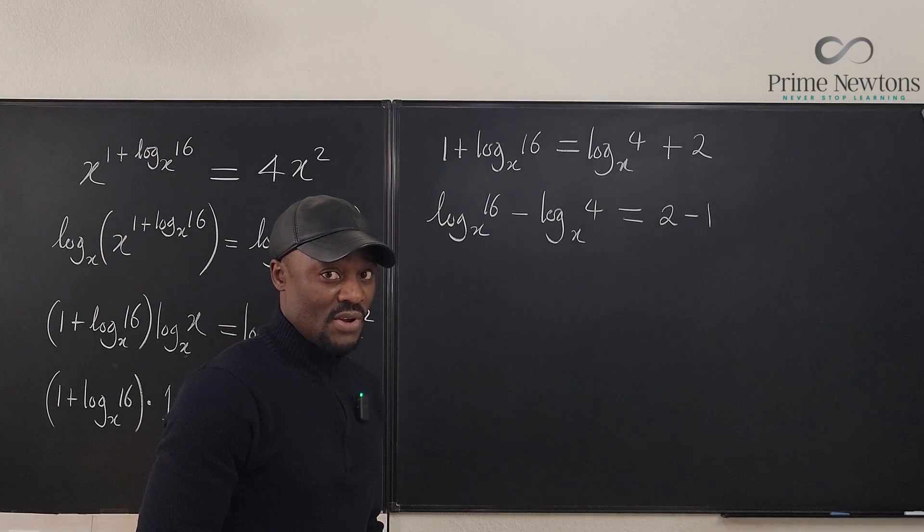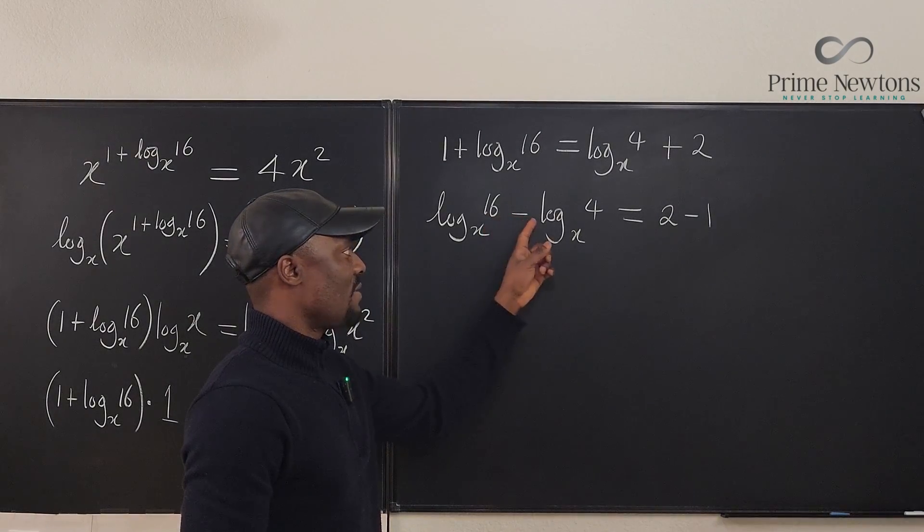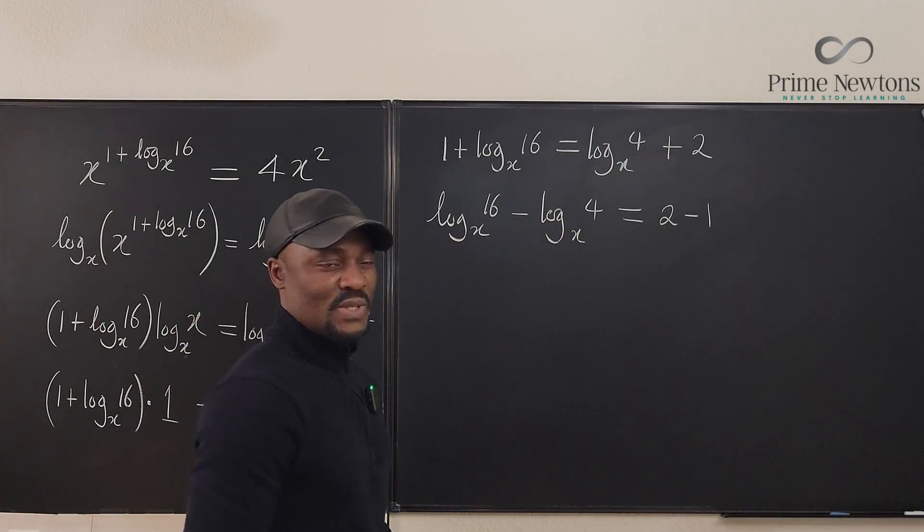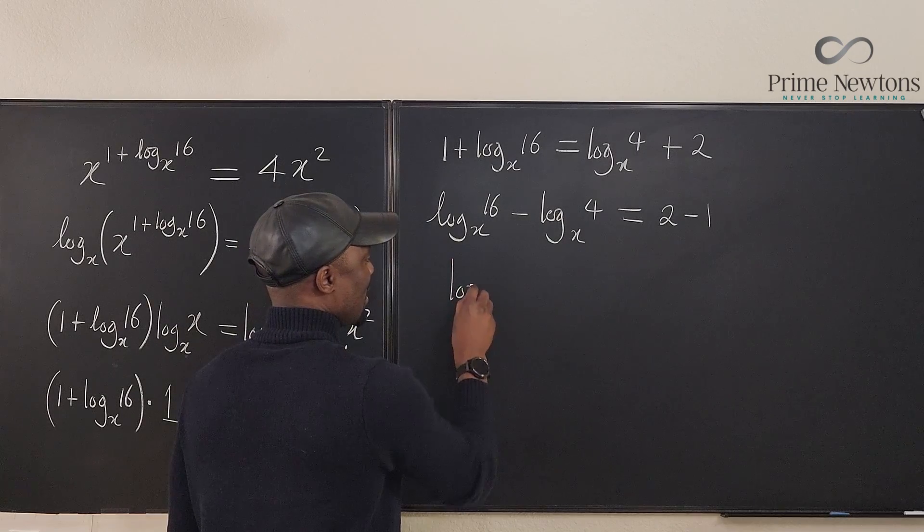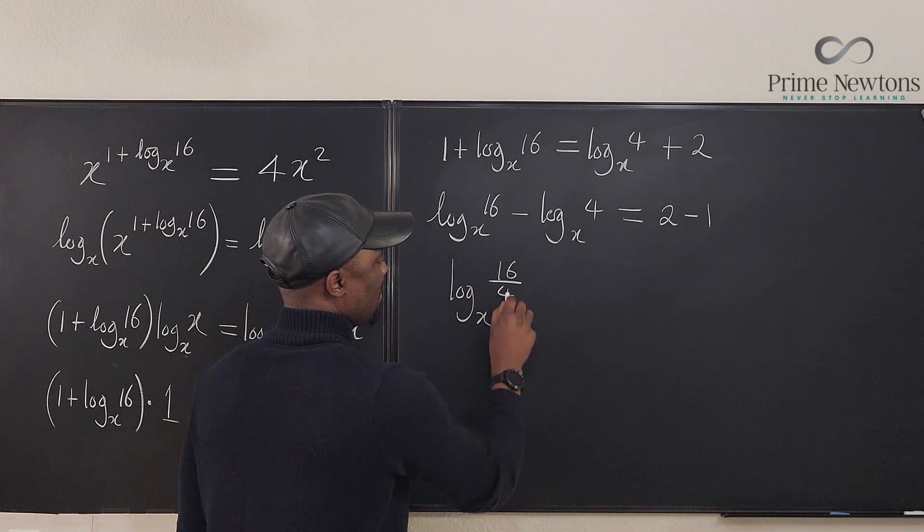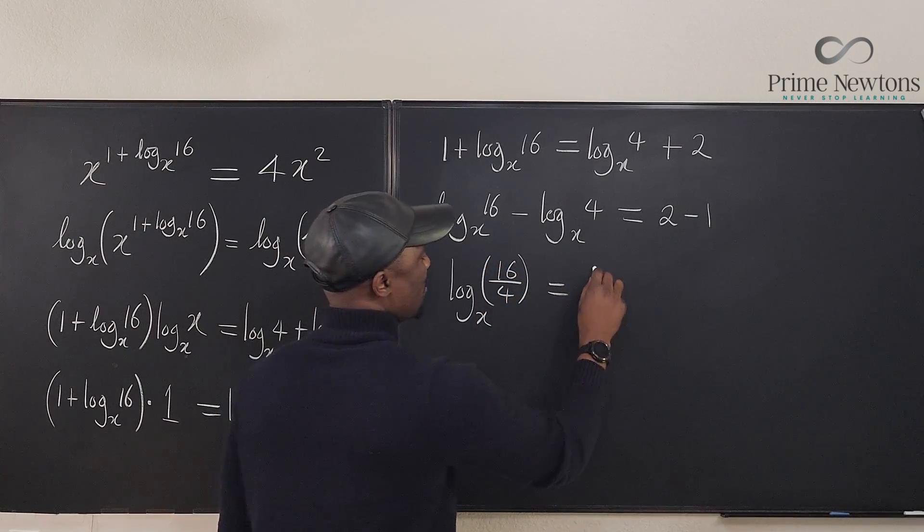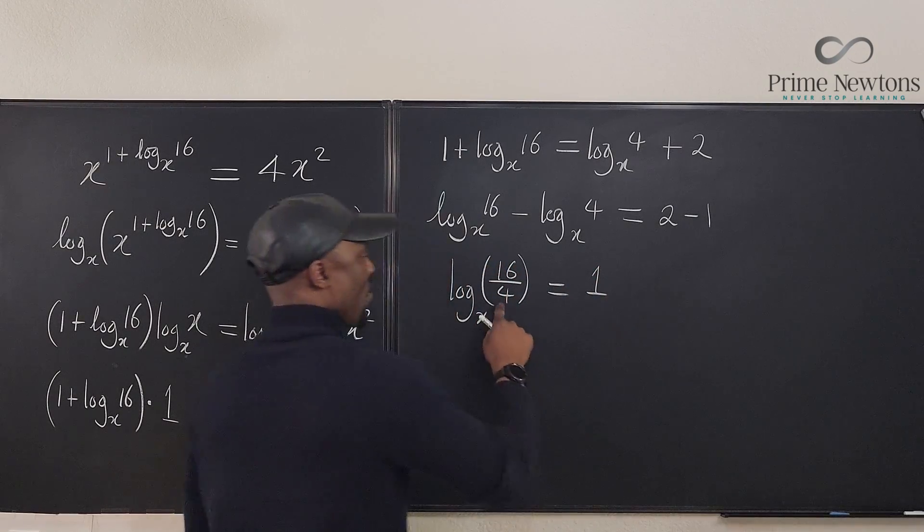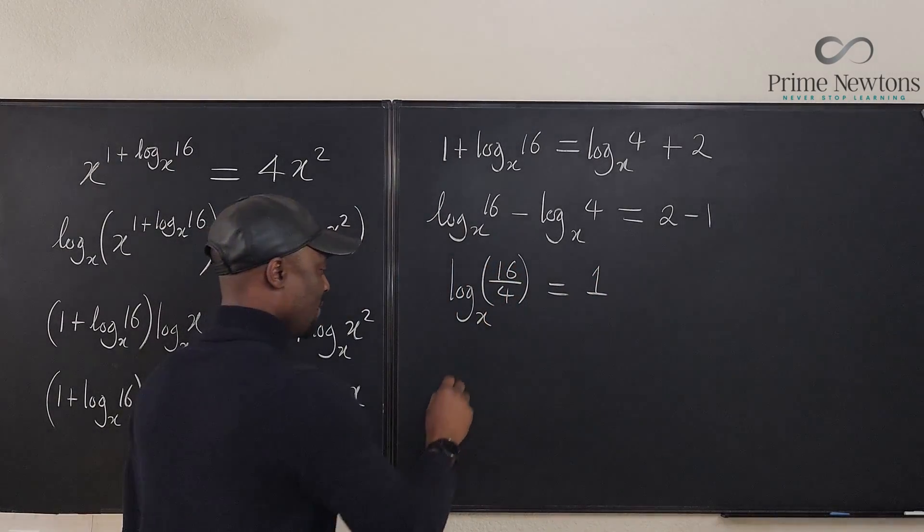By the laws of logarithms, remember when you have a subtraction, you can just do a division. So I'm going to do log base x of 16 divided by 4 will be equal to 1. What is 16 divided by 4? It's 4.